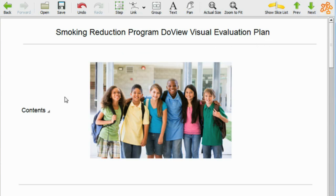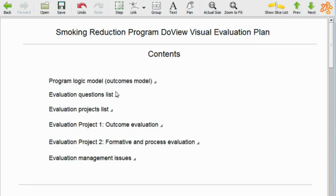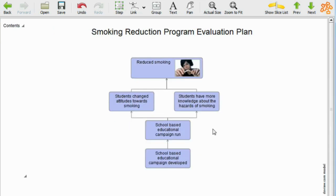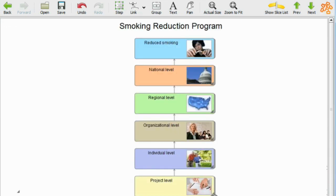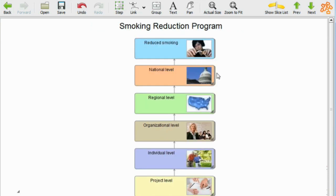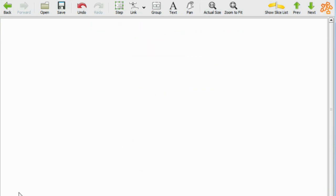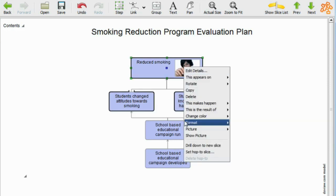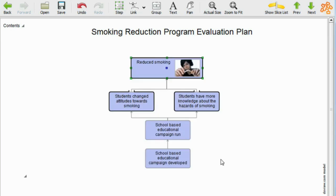Let us use them to structure our whole evaluation planning. So here we have a model, and it's a very simple one just for illustrative purposes. In reality, these models would be more complicated, and within DoView, it allows you to create multiple page models. So we would expect the model to be larger than this in the normal course of events. But for this illustration here, we have a very simple model, which is about a school-based educational campaign around smoking, a school-based campaign being run, students change their attitudes towards smoking because it's a smoking reduction program here, students have more knowledge about the hazards of smoking, and that leads through to reduced smoking.